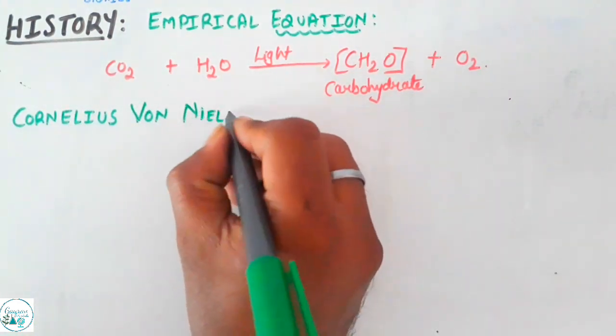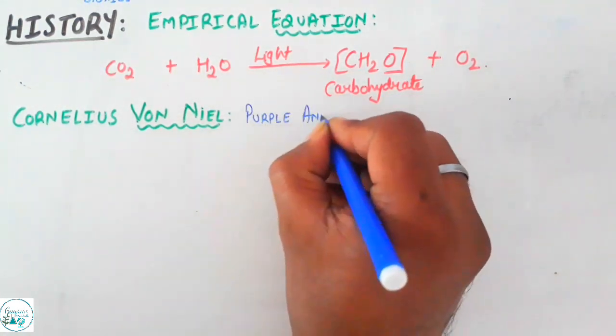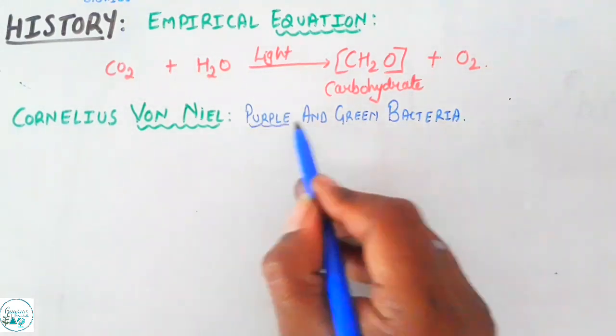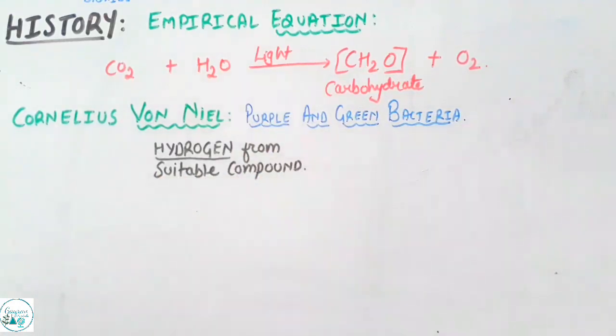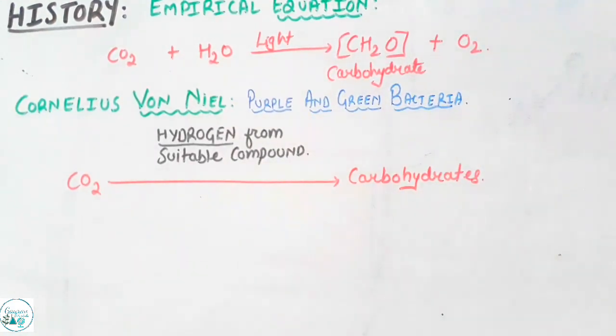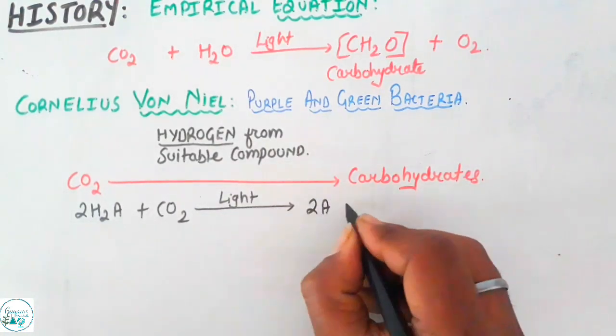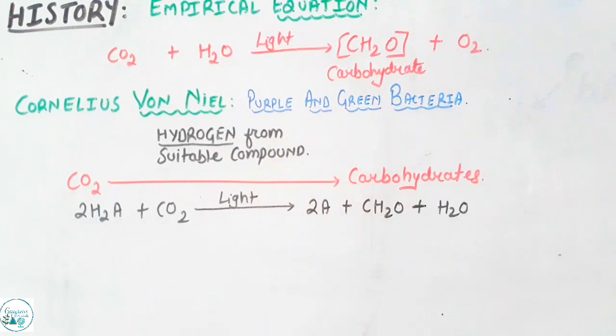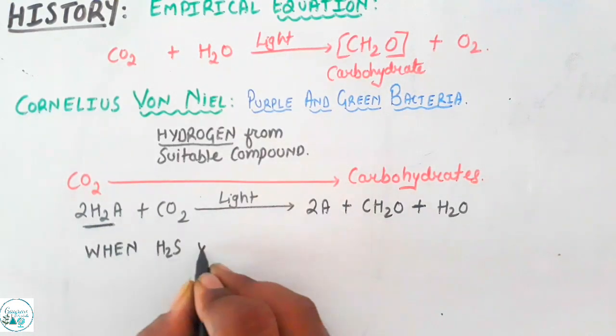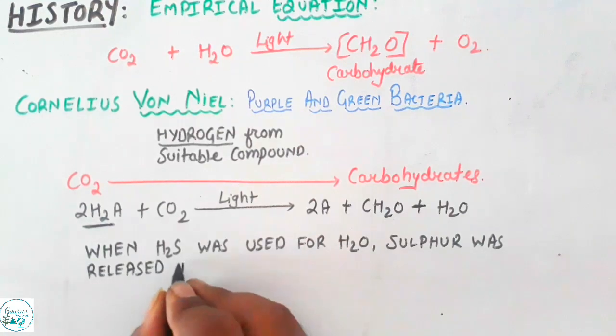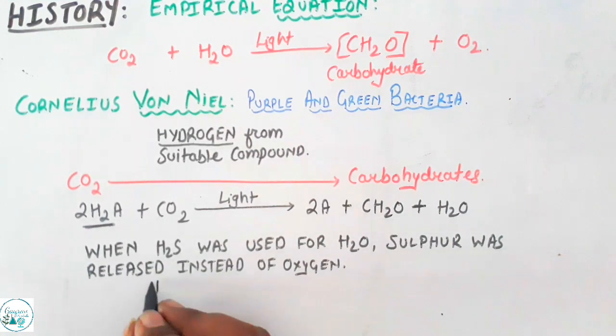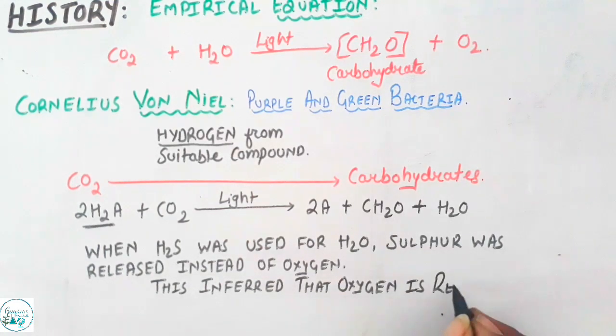It was the effort of Cornelius van Niel which laid the foundation of the detailed study of photosynthesis. He worked on purple and green bacteria. He observed that hydrogen from a suitable oxidizing compound can reduce carbon dioxide into carbohydrates, and again presence of light is very essential. The reaction was summed up as 2H2A plus CO2 in presence of light would give 2A plus carbohydrate plus water. It was found that when H2S, which is hydrogen sulfide, was used instead of water, sulfur was produced but not oxygen. This inferred that oxygen is released from water and not from carbon dioxide.